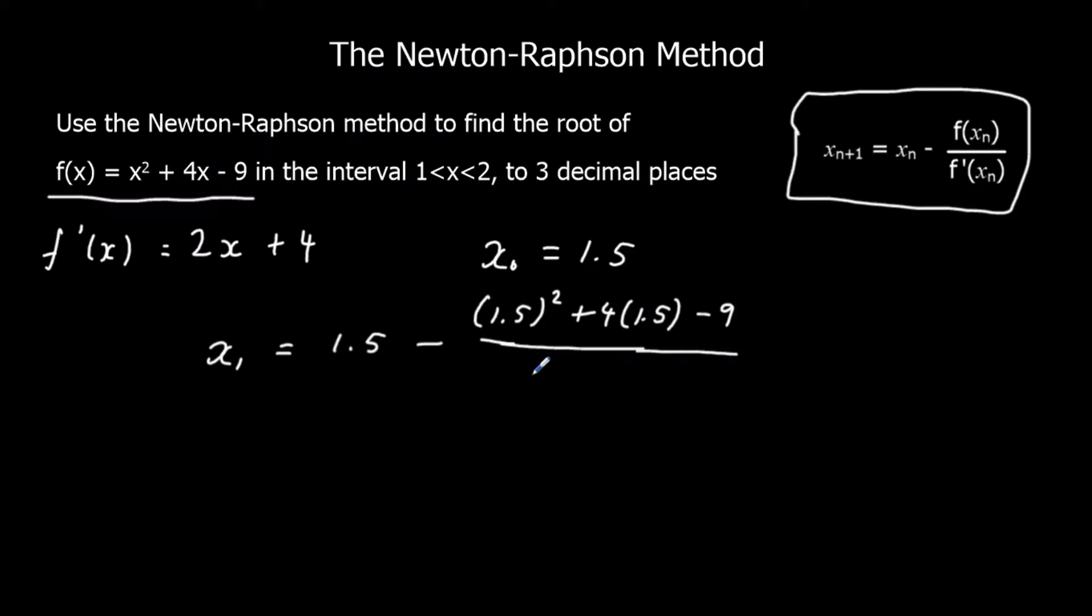Substituting the 1.5 into the derivative now. 2 times 1.5 plus 4. This is what we type into the calculator, and that will give us our x₁. We've got 1.5 minus 1.5² + 4(1.5) - 9 over 2(1.5) + 4. I've typed all of that into the calculator, and I've got x₁ as 1.607 and so on.